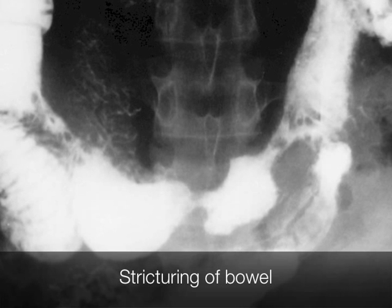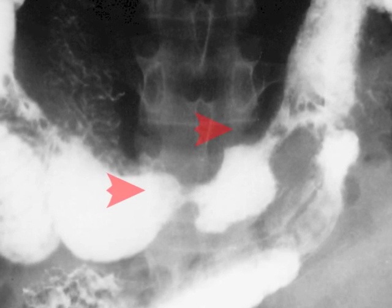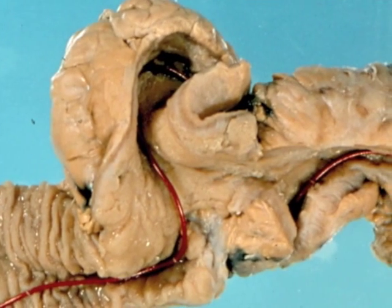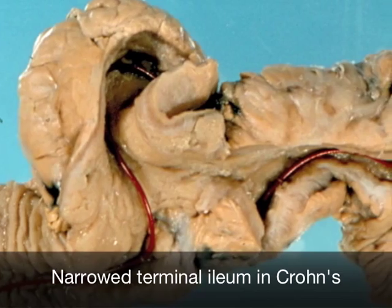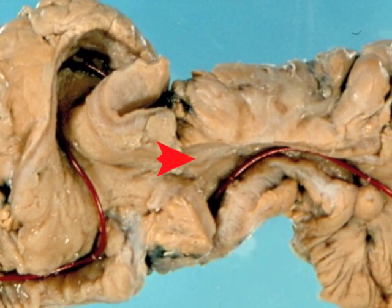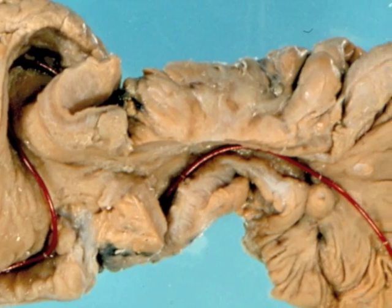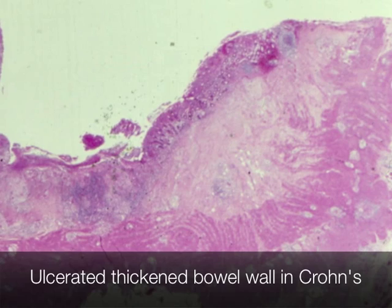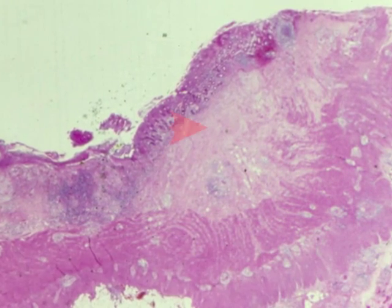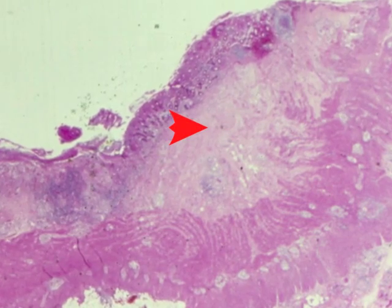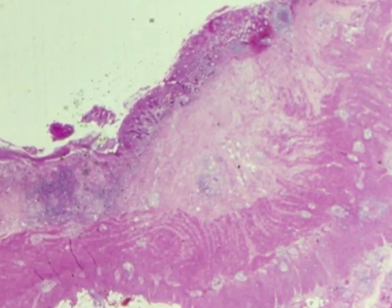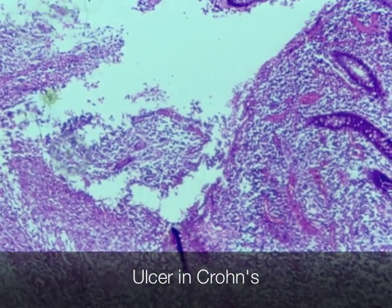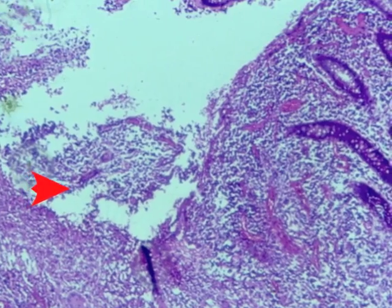On this x-ray you can see the severe stricturing caused by Crohn's. This shows the typical severe narrowing of the terminal ileum by Crohn's. When a section of the bowel is examined down the microscope, you can see the gross thickening caused by fibrosis and inflammation. And finally, this is the typical appearance of an area of ulceration caused by Crohn's disease.